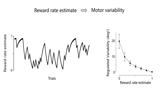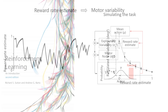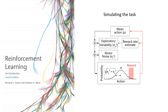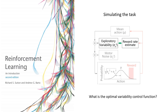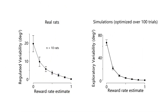Next, we wanted to understand what the benefits of such a strategy might be. For this, we used reinforcement learning simulations to ask what the optimal variability control function would be for an agent solving our task. Interestingly, our simulations suggested that to obtain the most reward, an agent should follow a strategy very similar to the one our rats employed.